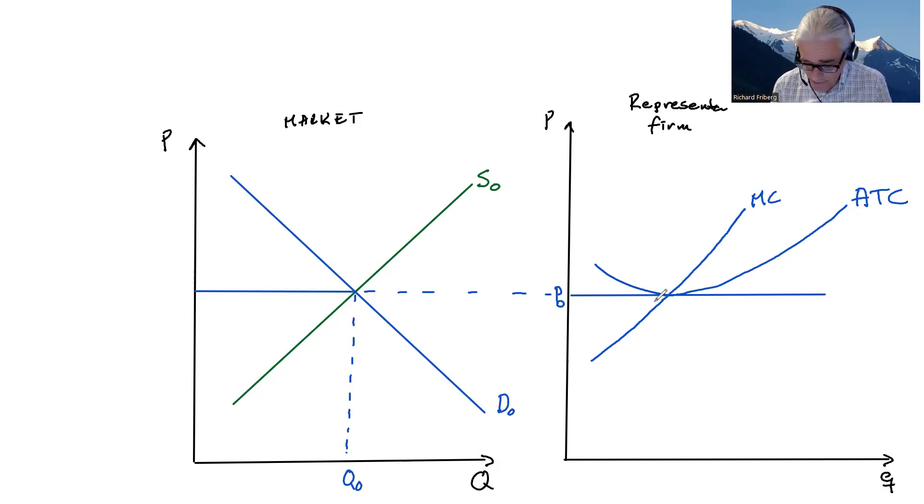We know that the marginal cost curve cuts through the average total cost curve at its lowest point. As long as we're below here, we're adding units that are below the average, helping pull the average down. Whereas once we cross, we're adding units that are above the average, pulling the average up. So for the individual firm, this gives the following optimal quantity.